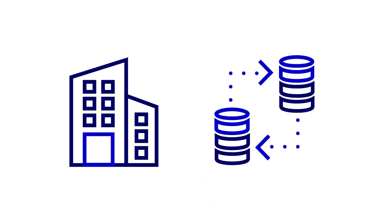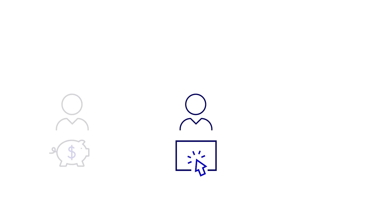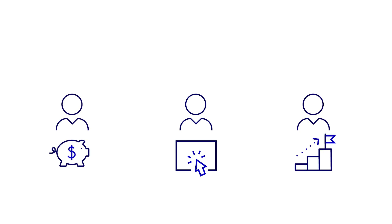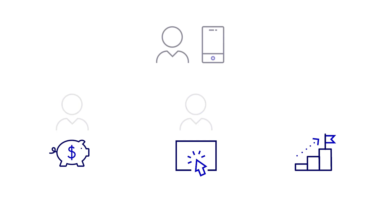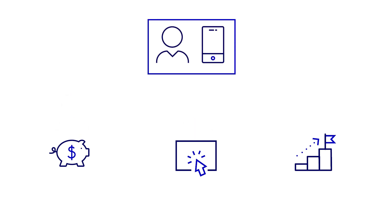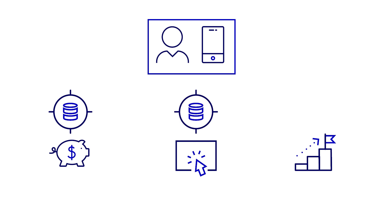Businesses may have hundreds of IT systems, and the same data may be replicated across multiple systems. For example, customer information may be present in the marketing, finance, and sales databases. When building a consolidated report, such as customers and their phone numbers, it may be difficult to identify which is the correct source for the customer name and which is the correct source for the customer phone number.